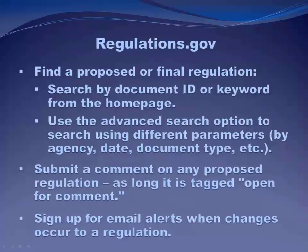Let's spend a minute talking about regulations.gov — a website used by over 300 participating federal agencies to conduct their rulemaking process. Unfortunately, not all federal agencies participate; two significant non-participating agencies are the Federal Communications Commission (FCC) and the Securities and Exchange Commission (SEC). For those, you'd have to go directly to their website. Through regulations.gov, participating agencies publish their proposed and final rules and solicit public comments. If you want to comment on a rule from a participating agency, you can go to regulations.gov and submit your comment through their interface.